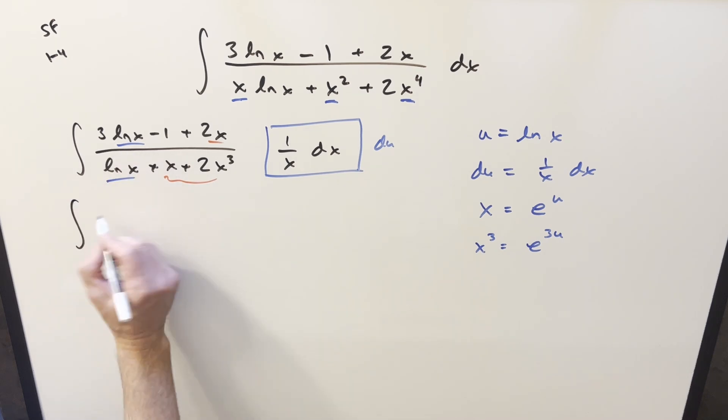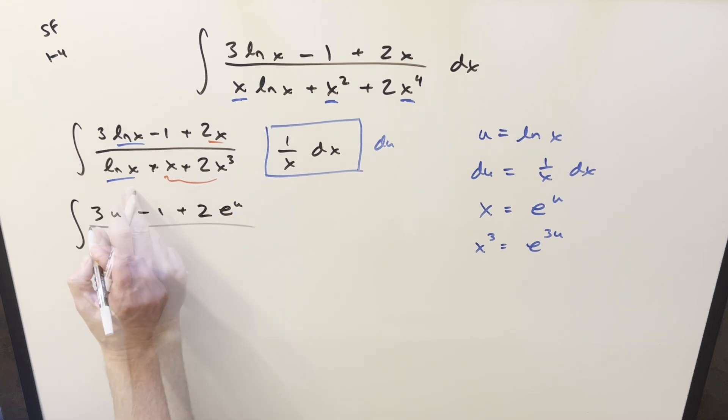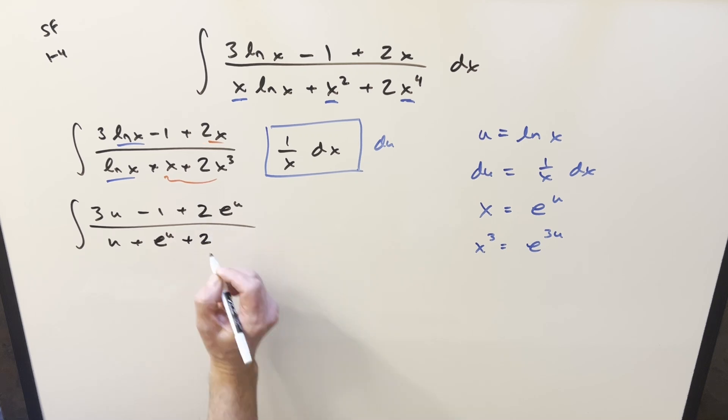So we'll go ahead with this substitution. This is just going to become 3u minus 1. This becomes plus 2 e to the u. lnx is just u, e to the u. And then here we use this. This is going to become plus 2 e to the 3u du.